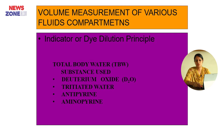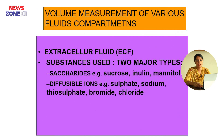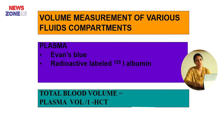Volume measurement of the various fluid compartments using the indicator or dye dilution principle. Total body water can be measured using deuterium oxide, tritiated water, antipyrine, and aminopyrin. Extracellular fluid can be measured using sucrose, inulin, mannitol, sulphate, sodium bromide, and chloride. For plasma volume, we can use Evans blue and radioactive labeled iodine-125 albumin.